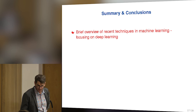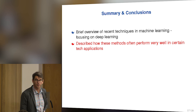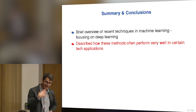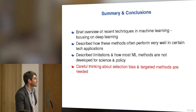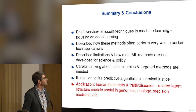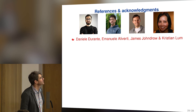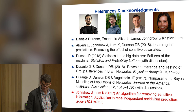I'll wrap up there. I gave a brief overview of recent techniques in machine learning focusing on deep learning — talking about some positive aspects, but also some negative aspects, particularly if you want to use them outside their canonical tech-type application areas for science or policy. In these other cases, we need to really carefully think about selection bias and develop targeted methods. I gave a couple of illustrations. I'd like to wrap up with acknowledgements. Daniele Durante, now at Padua, did the brain connectome stuff. Emmanuel did the fair predictive learning. And James and Kristian are the gurus of this kind of fair predictive learning area.